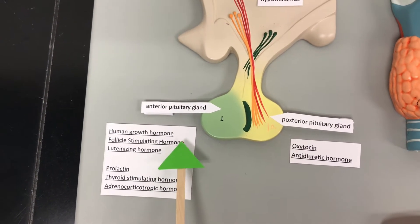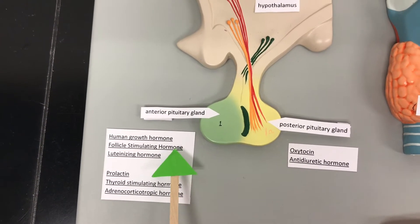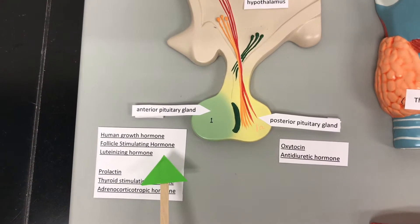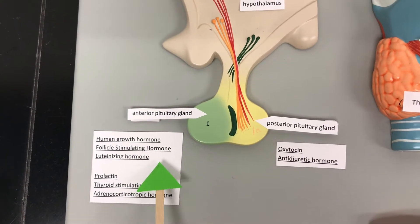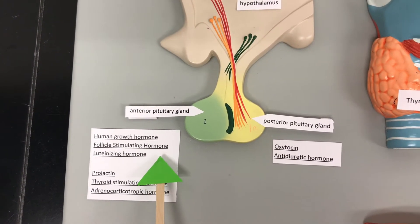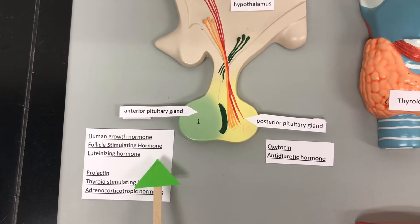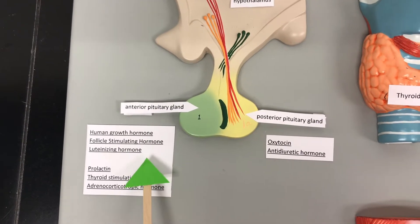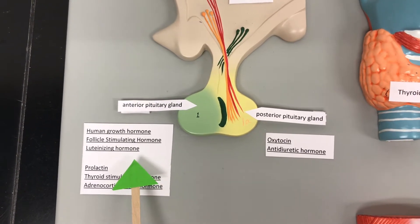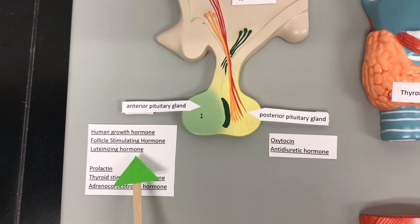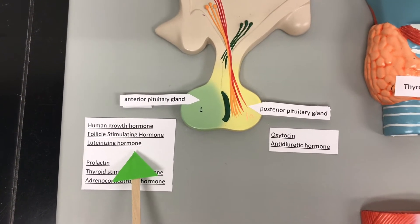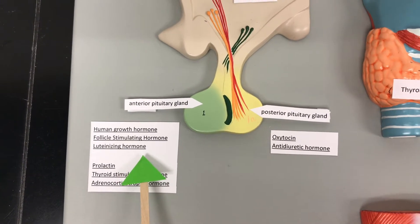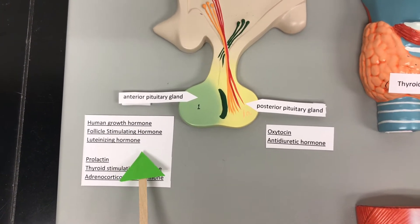Human growth hormone is going to target the bones and the muscles. Follicle stimulating hormone is going to target ovaries and testes for follicular production. Luteinizing hormone is responsible for secondary sex hormones, such as estrogen and testosterone.